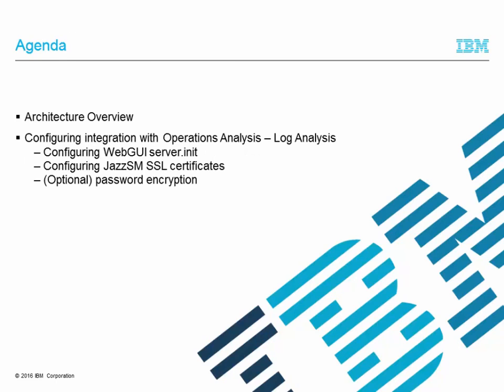The first thing we'll do is go through the architecture overview and then discuss configuring the various elements of integration between web GUI and LA, configuring web GUI via the installation manager panel and also via server.init, and configuring JazzSM to import the SSL certificates needed to connect to LA, and optionally password encryption.